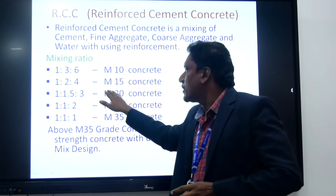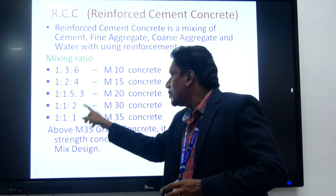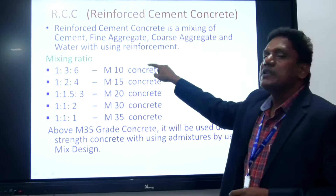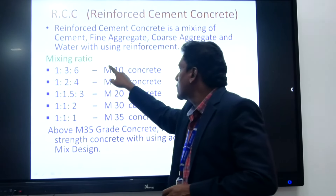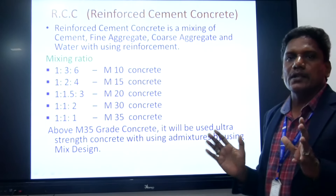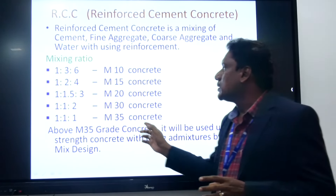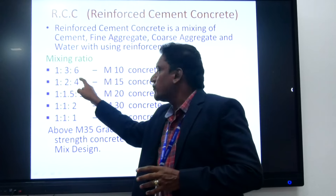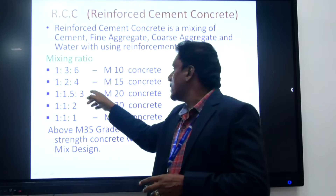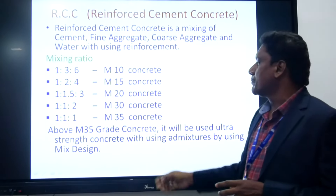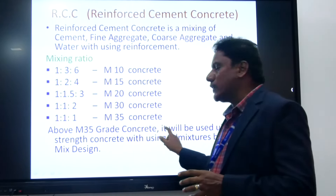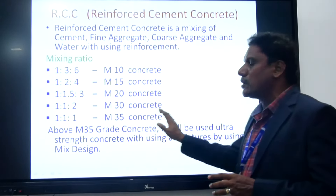The mixing ratios for RCC range from 1:3:6 up to 1:1:1. The ratio 1:3:6 is for M10 grade, where M denotes mix and 10 denotes the characteristic compressive strength of concrete. Next, 1:2:4 is applicable for M15 concrete, and 1:1.5:3 is applicable for M20 concrete. Above M35 grade, ultra-high-strength concrete is used with admixtures and mix design.